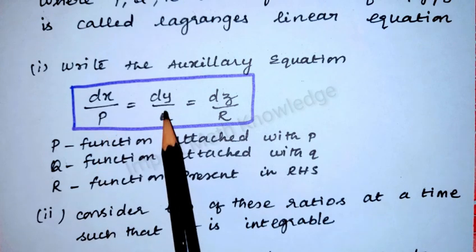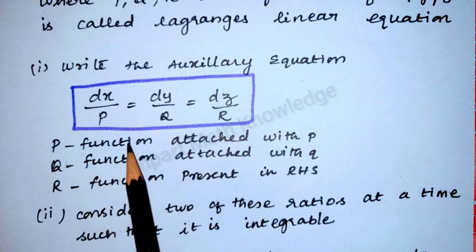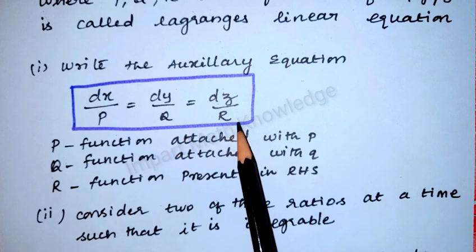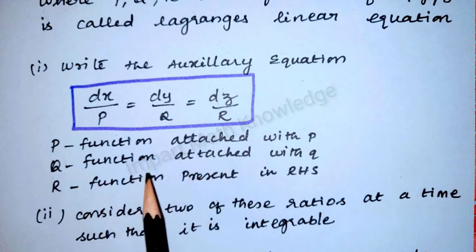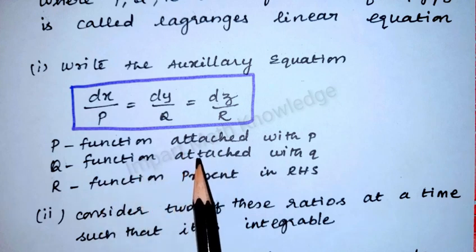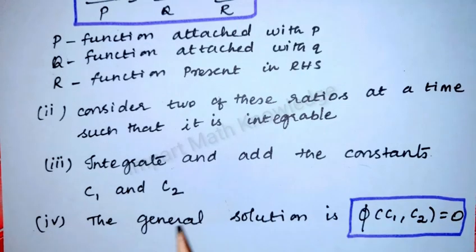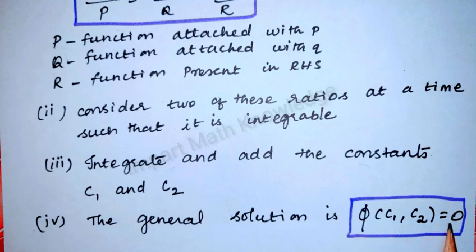The auxiliary equation is dx/P = dy/Q = dz/R, where P is the function attached with small p, Q with small q, and R is the right-hand side function. Consider two of these ratios at a time, make sure it is integrable, then integrate, simplify, and get the values of c1 and c2. From c1 and c2, we write the general solution: φ(c1, c2) = 0.